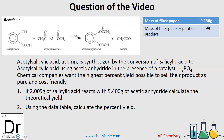The question of the video is: in a reaction, salicylic acid and acetic anhydride synthesize or create aspirin, also called acetylsalicylic acid. Chemical companies want to have the highest percent yields in order to sell their products at the most pure and cost-friendly way. We don't want to have any excess stuff laying around. If about 2 grams of salicylic acid reacts with 8.4 grams of acetic anhydride, calculate the theoretical yield and then use the data table to calculate the percent yield.